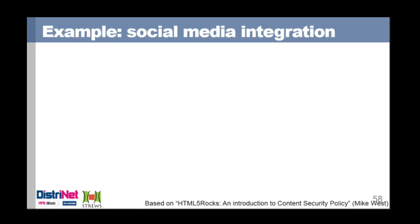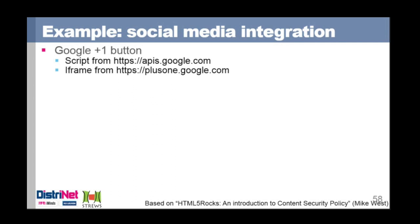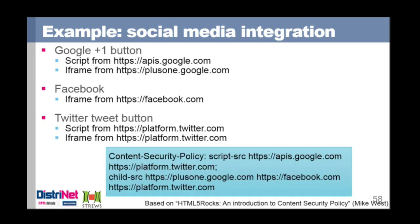Another example is social media integration — most websites have Google buttons from APIs and plus.google.com, Facebook iframes, and Twitter content. In CSP, you specify script-src allowing both Google and Twitter script origins, and frame-src allowing all three social platforms. Multiple origins are space-delimited in each directive. Note that in practice the entire CSP is one long response header line — new lines are used here only for readability. There's also a meta tag variation allowing you to embed the policy as part of the HTML page itself, useful for popular frameworks and libraries.